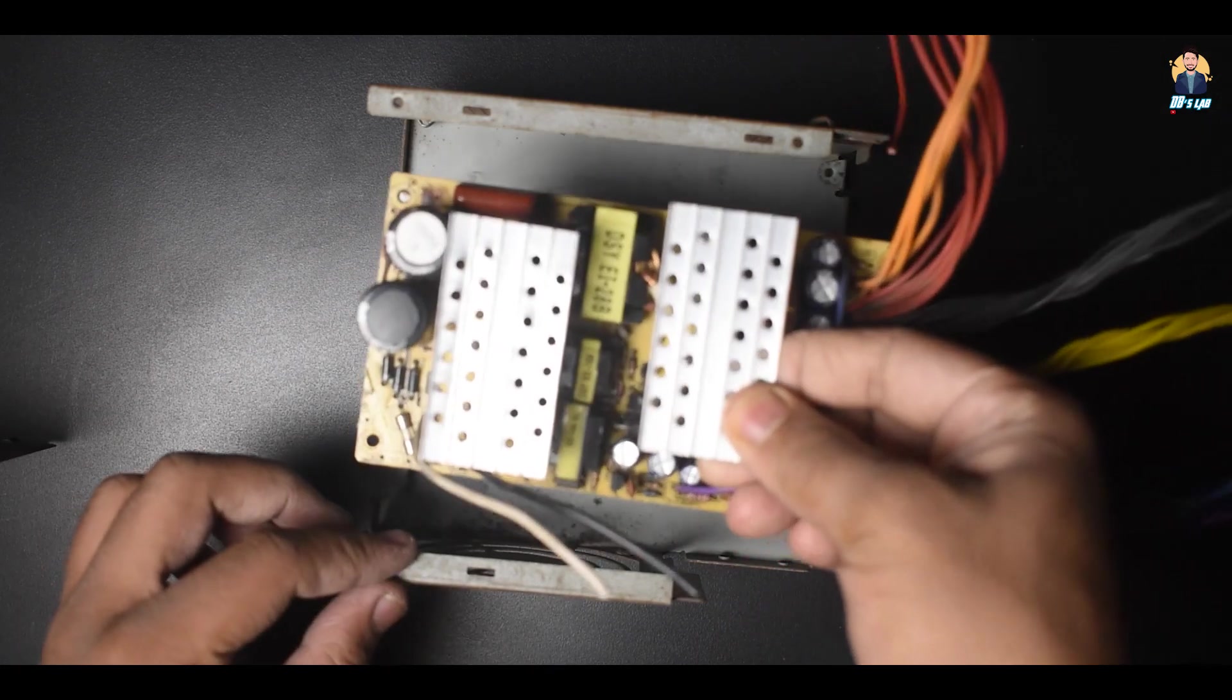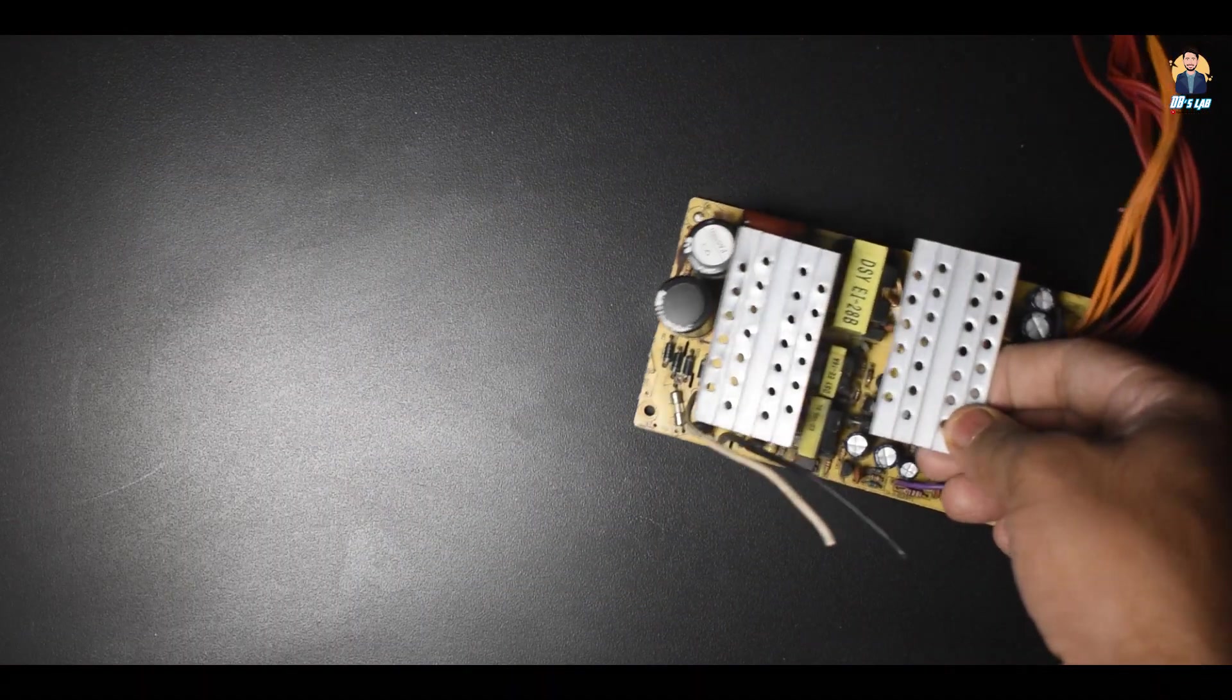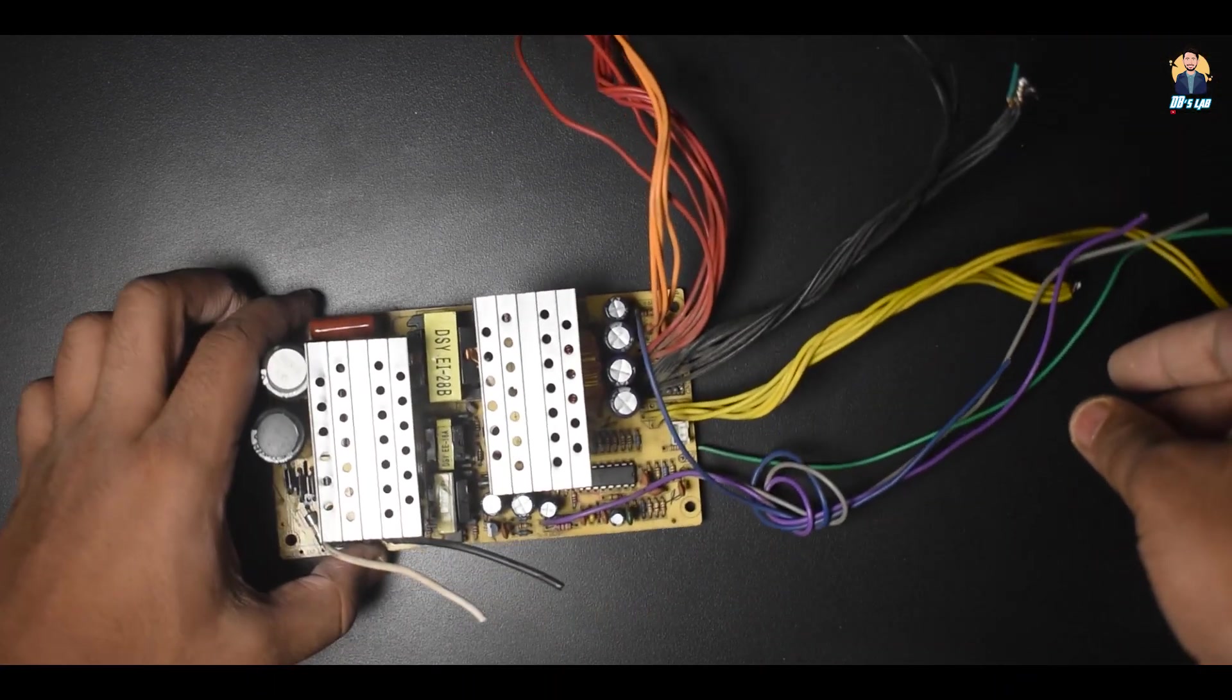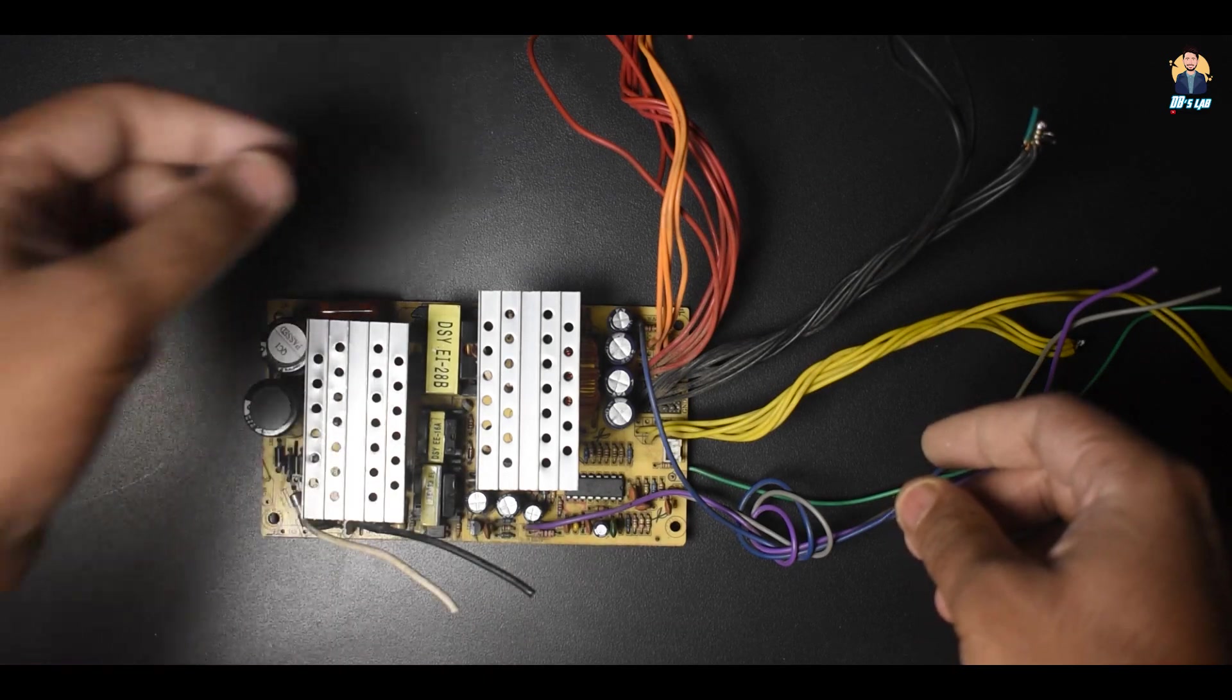Step 1: Disassemble the power supply unit by taking out the screws. Cut off all the wires to the 24 pin connector. In the end, it will look like this.